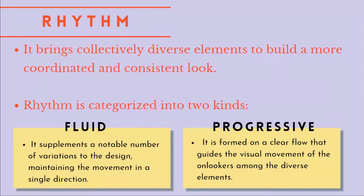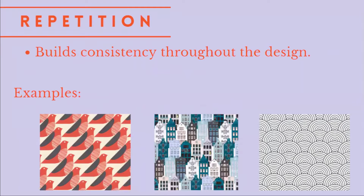Next, rhythm binds together individual elements and adds to a design by building a sense of coordinated movement. Rhythm is categorized into two kinds: fluid and progressive. Fluid supplements a notable number of variations in design maintaining the movement in a single direction. Progressive is formed on a clear flow that guides the visual movement of the onlookers among the diverse elements. Next, repetition of particular elements such as logos or colors can help make a brand effortlessly identifiable and establish the overall look.